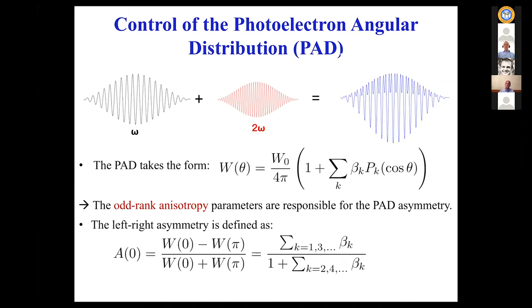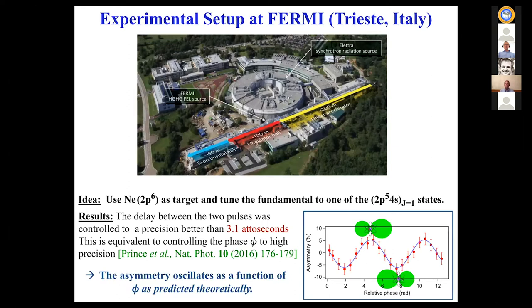Because of this interference, the photoelectron angular distribution takes a general form, but in contrast to standard photoionization, there will now be odd-rank anisotropy parameters — beta1, beta3, and so on — leading to an asymmetry you can measure by comparing yield at 0 degrees versus 180 degrees. You can control this via the delay. This was the experimental setup at FERMI in the group of Kevin Prince, published in Nature Photonics a few years ago — quite an amazing experiment.